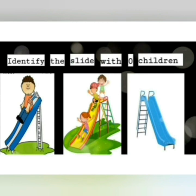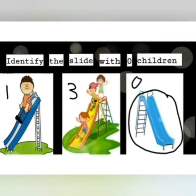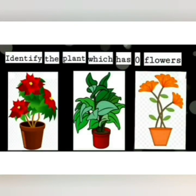Our first question is identify the slide with 0 children. In first picture, there is one boy on the slide. In second picture, there are 3 children on the slide. In third picture, there is no child on the slide. So, our answer is third picture because there are 0 children. Let's clap for ourselves.